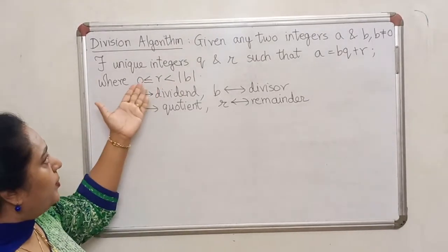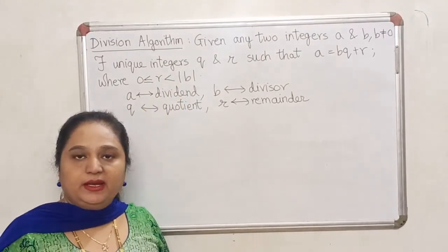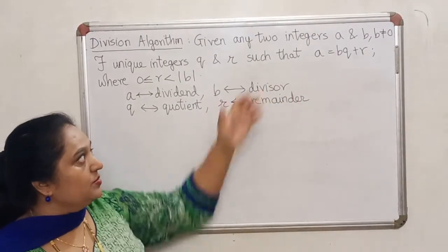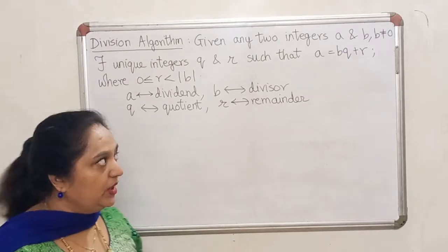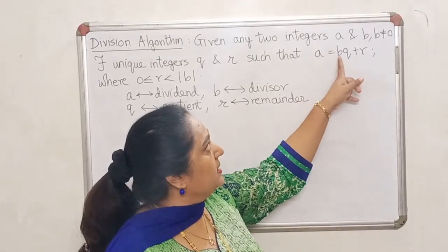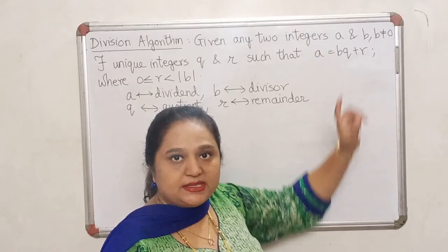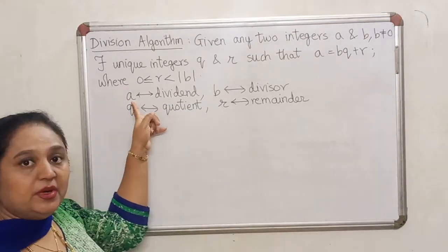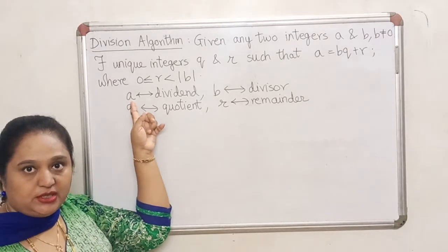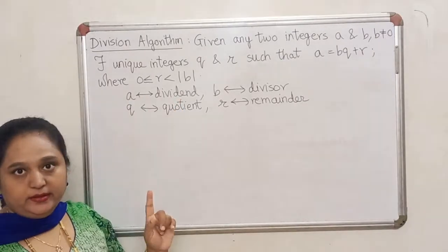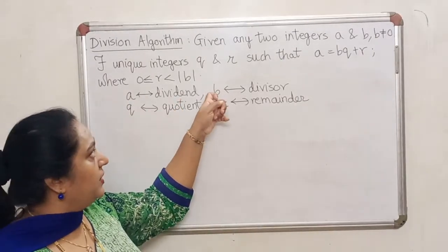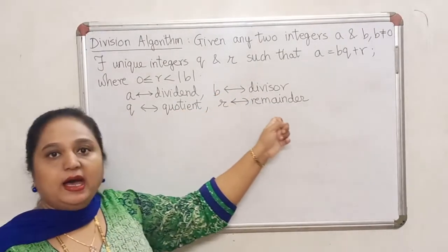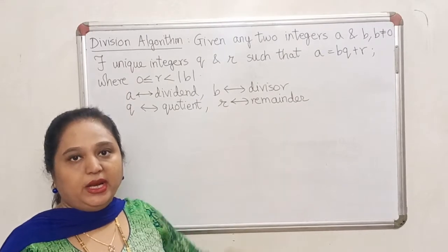Because irrespective of whether B is positive or negative, modulus of B is going to be a positive number, and therefore it would be okay to say that R is smaller than modulus of B. So if we put these two conditions on the remainder, the remainder becomes unique and consequently the quotient also becomes unique. Moreover, you can write A as B times the quotient plus the remainder. The number undergoing division is called the dividend, the number which will divide is called the divisor, Q is the quotient, and R is called the remainder.